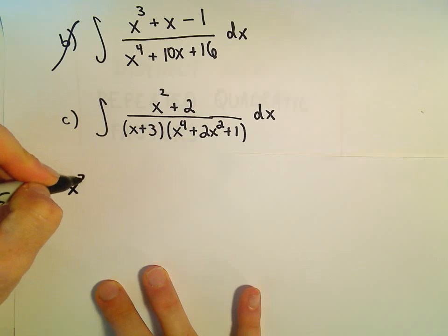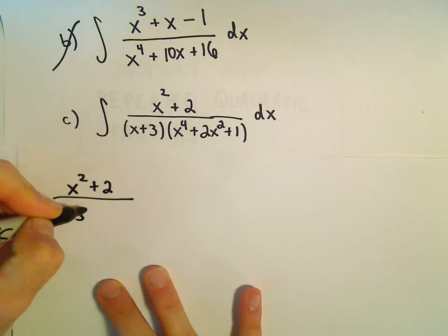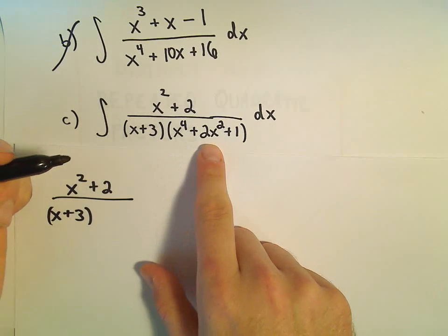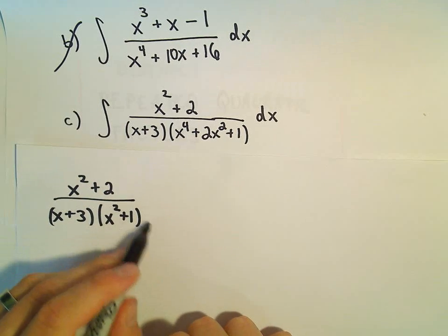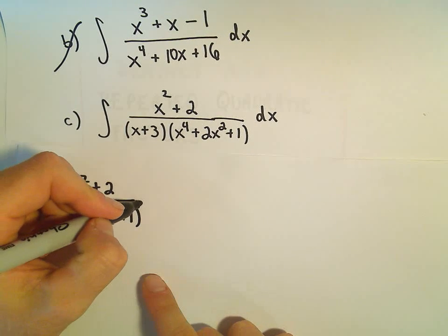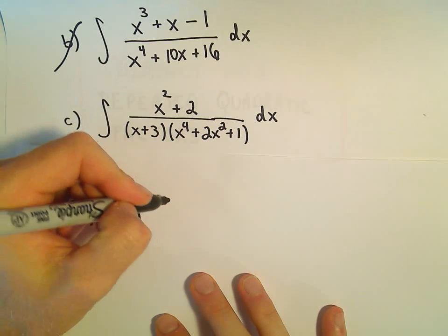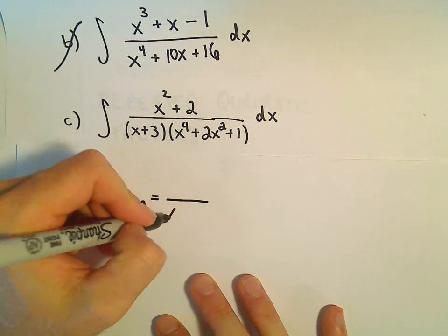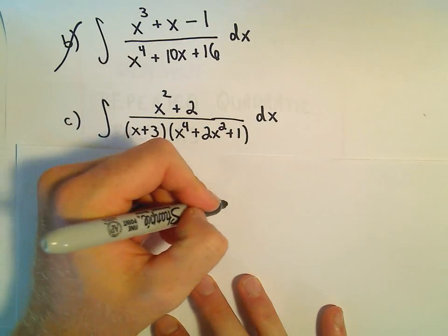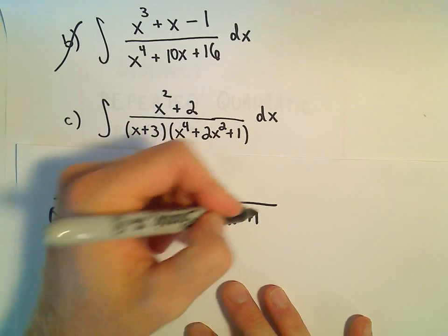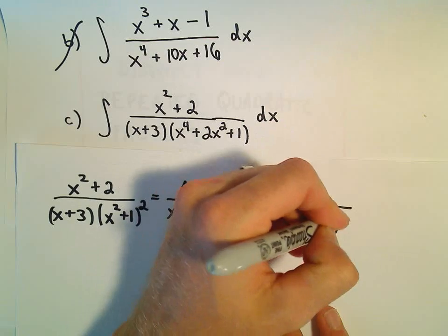The first thing I'm going to do is the partial fraction decomposition. x to the 4th plus 2x squared plus 1 factors as x squared plus 1 times x squared plus 1, which we can write as x squared plus 1 quantity squared. So we'll have x plus 3 on one factor, x squared plus 1, and x squared plus 1 quantity squared.